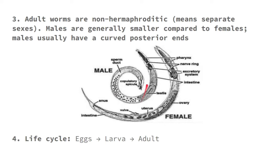The typical life cycle of nematodes is simple: from eggs or ova, they become larvae, then adults, and the cycle repeats. That is the general life cycle of all nematodes — egg, larva, adult, repeat.